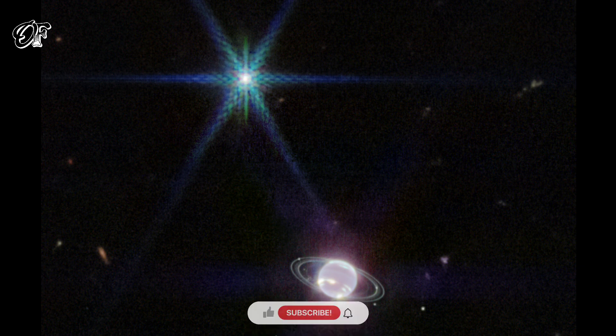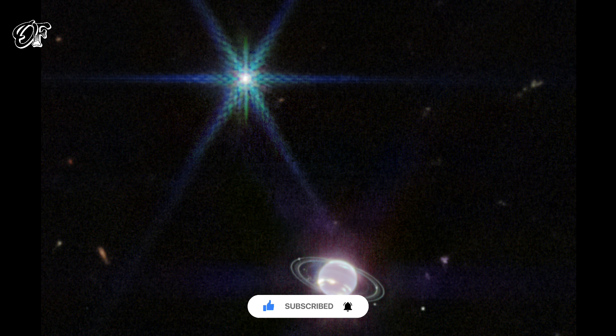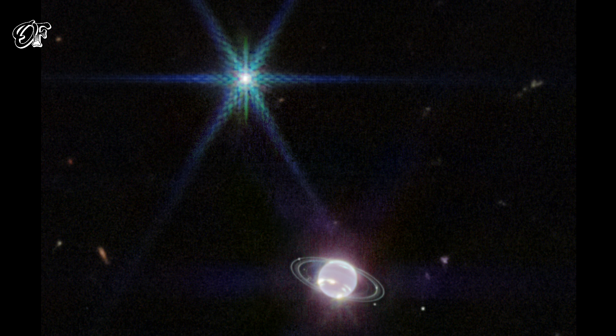Neptune's faint rings are striking in this new space-based planetary portrait. Details of the complex ring system are seen here for the first time since Neptune was visited by the Voyager 2 spacecraft in August 1989. Let us know your thoughts on this in the comment box.